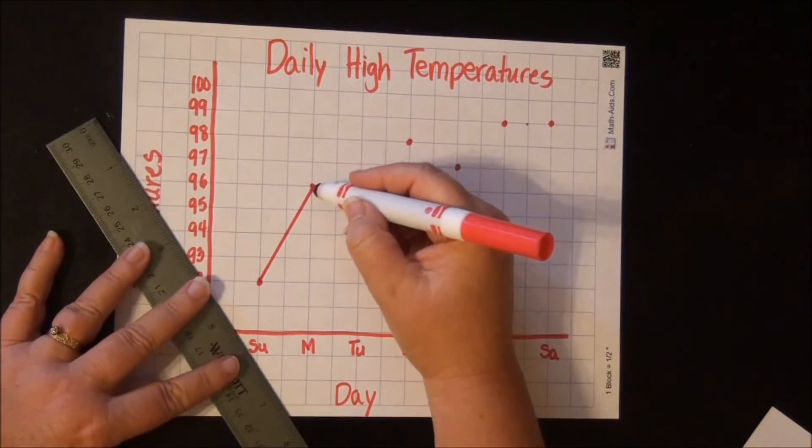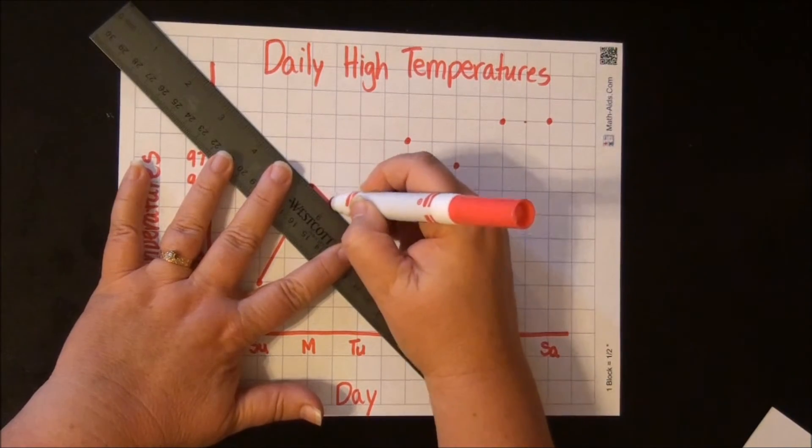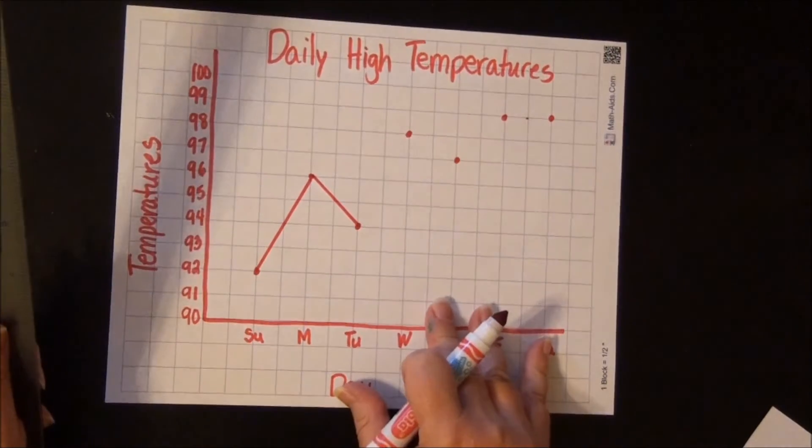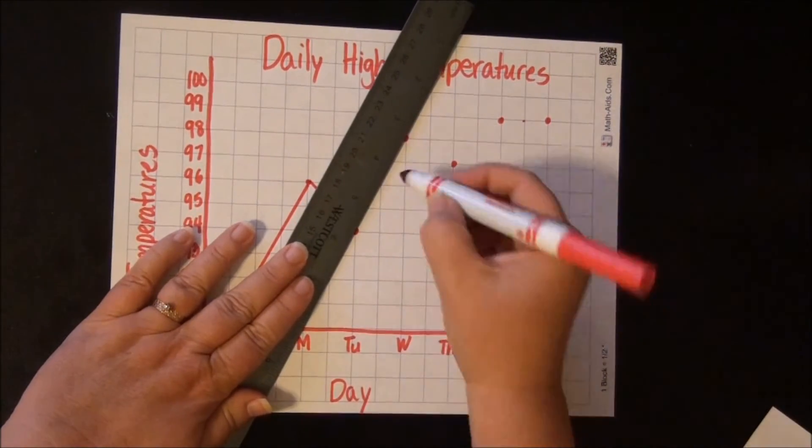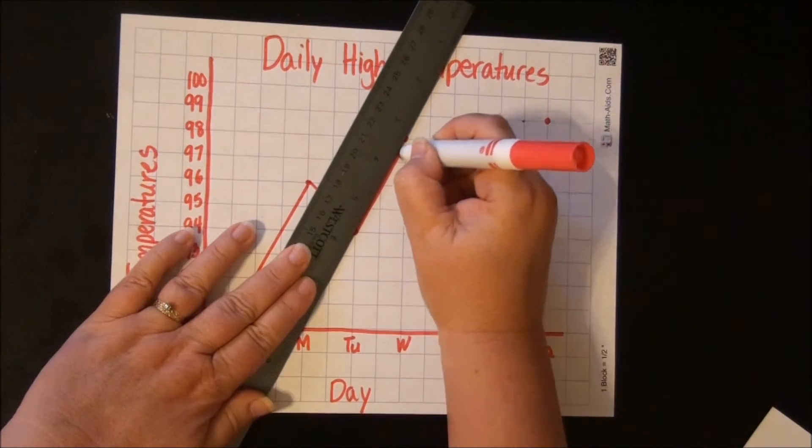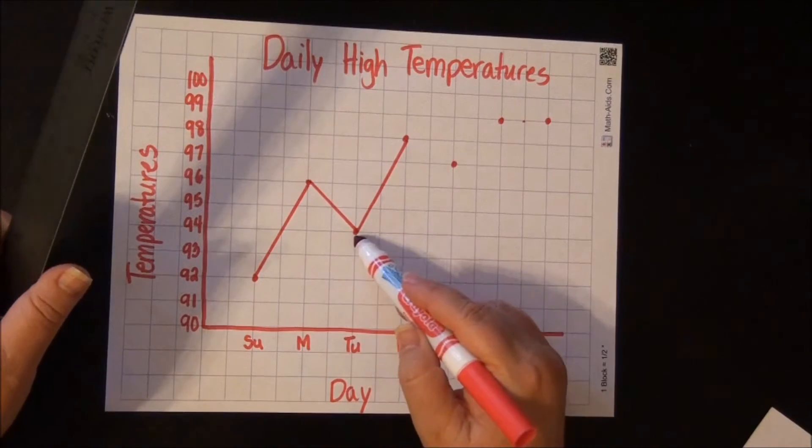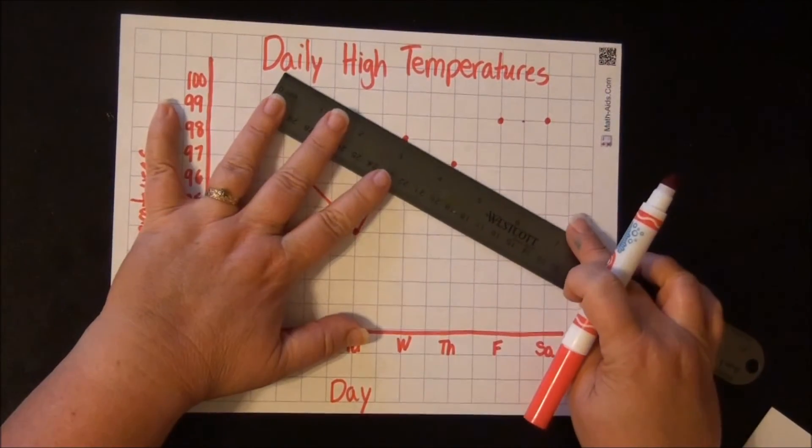Now I'm going to move my ruler from the Monday dot to the Tuesday dot. Now I'm connecting the Tuesday dot and the Wednesday dot. That was Sunday to Monday, Monday to Tuesday, Tuesday to Wednesday. Now I'm connecting Wednesday to Thursday.